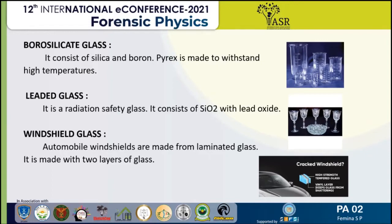Lead crystal glass is a type in which lead replaces the calcium content of a typical potash glass. Typical lead crystal has a density of around 3.1 grams per centimeter cubed, and high lead glass can be over 4.0 grams per centimeter cubed.